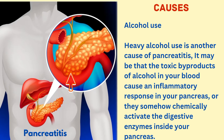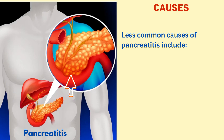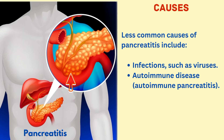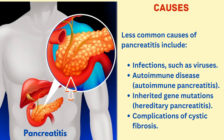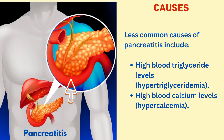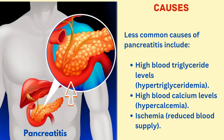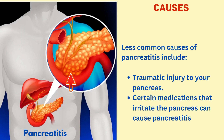The next cause is alcohol use. Heavy alcohol use is another cause of pancreatitis. It may be that the toxic byproducts of alcohol in your blood cause an inflammatory response in your pancreas, or they somehow chemically activate the digestive enzymes inside your pancreas. Less common causes include: infections such as viruses, autoimmune disease called autoimmune pancreatitis, inherited gene mutations called hereditary pancreatitis, complications of cystic fibrosis, high blood triglyceride levels called hypertriglyceridemia, high blood calcium levels called hypercalcemia, ischemia (reduced blood supply), traumatic injury to your pancreas, and certain medications that irritate the pancreas.